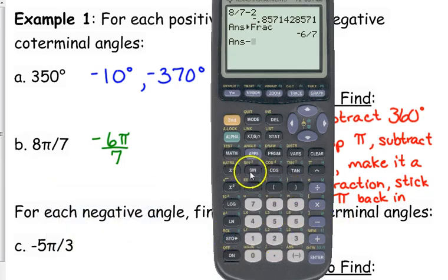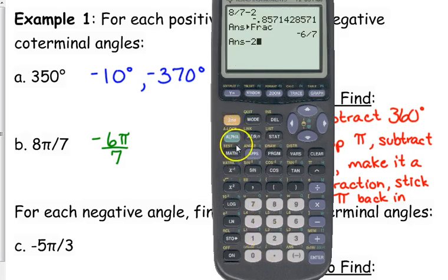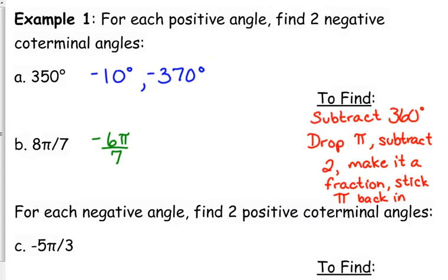I need another one, so I subtract 2 again, turn it into a fraction — negative 20π/7 is another co-terminal angle. We could do that all day: subtract 2, turn it into a fraction, stick π back on there, and come up with an infinite number of negative co-terminal angles.